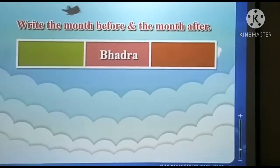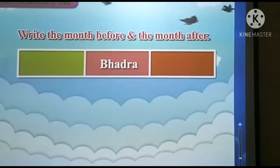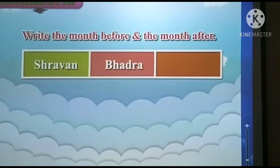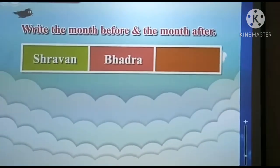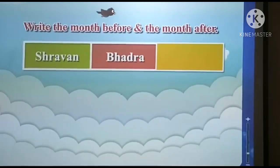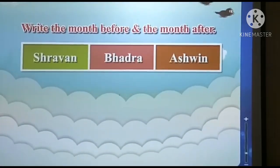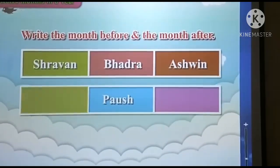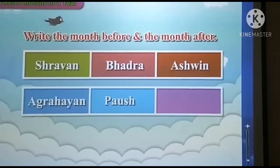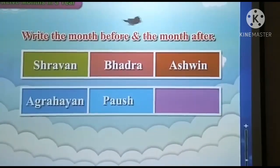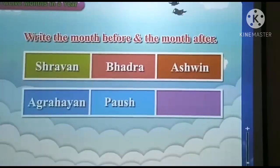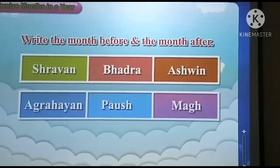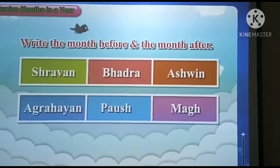Now write the month before and the month after. Which month comes before Bhard? Shravan. Shravan comes before Bhard. Which is the month after Bhard? Ashwin. Ashwin month comes after Bhard. Which is the month before Posh? Agrahayan. Agrahayan month comes before Posh. Which is the month after Posh? Magh. Magh month comes after Posh.